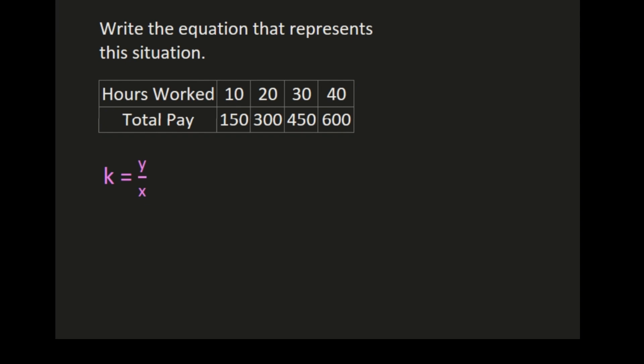And the first thing we need to do is determine if this is a proportional relationship, and we'll do that by calculating our constant of proportionality using the formula y over x. Which means that we need to determine what in our table is our x values and which one is our y values.